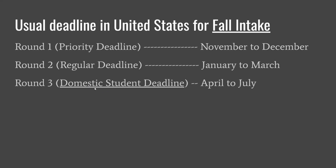Round 3 is usually only for domestic students, because if we apply after March, the university gives back a decision, then you need to decide whether you want to go to that university, and then you need to go through the visa process, which takes time. So international students need to apply only till Round 2. Domestic students can apply as late as July for universities starting in July, August, or September.